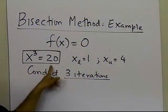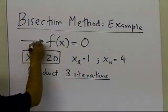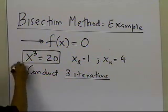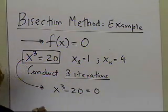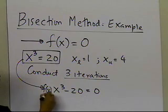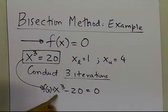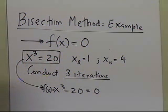The equation given to us is x cubed equal to 20. The bisection method works for equations of the form f(x) equal to 0, so if your equation is not in that form, you have to rewrite it. I rewrite this as x cubed minus 20 equal to 0, and that becomes my function f(x). All I have to do is take 20 to the left-hand side.